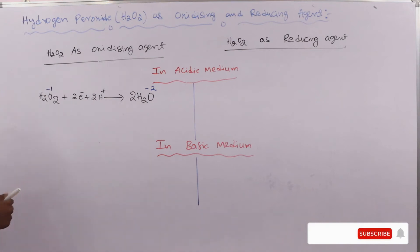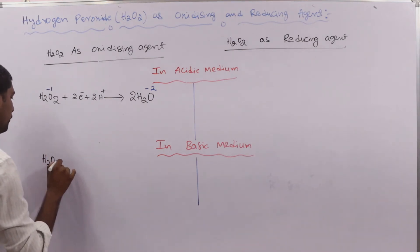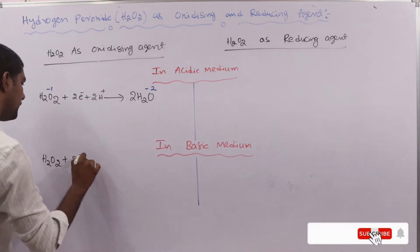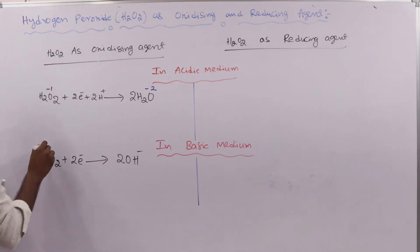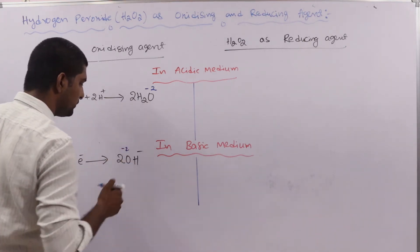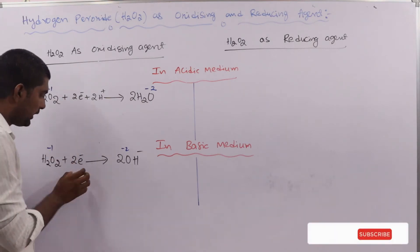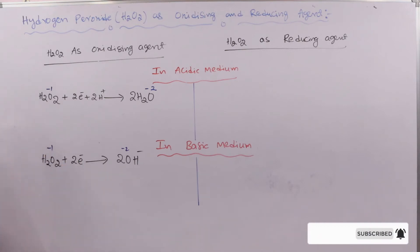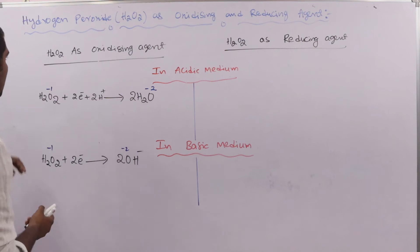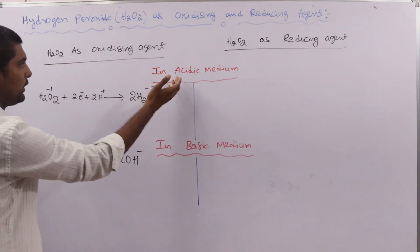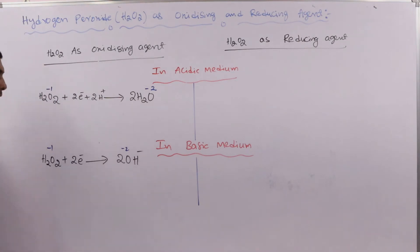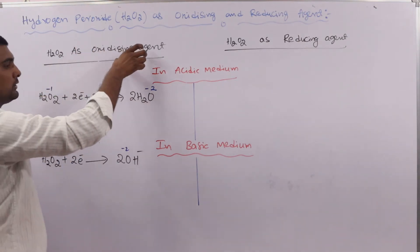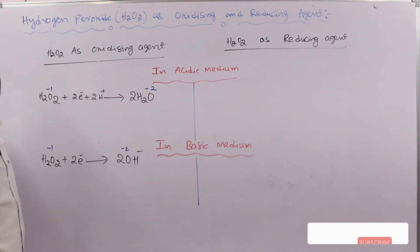Now suppose H2O2 acts as an oxidizing agent in the basic medium. The reaction is: H2O2 + 2e⁻ gives 2OH⁻ ions. Here also, the oxidation state of oxygen goes from −1 in H2O2 to −2 in OH⁻, so it is taking two electrons and undergoing reduction, oxidizing the other substance. So in the acidic medium H2O2 gives two moles of H2O, and in the basic medium it gives two OH⁻ ions when acting as an oxidizing agent.